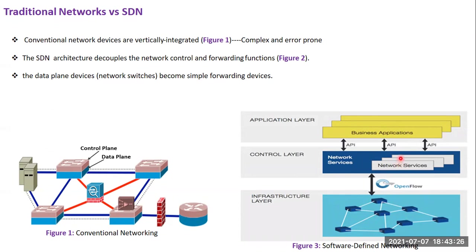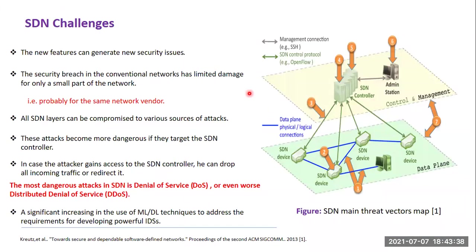We can also implement any application through the Northbound API — applications like security applications, load balancer, quality of service, and so on. However, one of the biggest challenges in the network is security. The security in the SDN network is a double-edged sword. We can use SDN to enhance security by implementing new security applications like firewalls or intrusion detection systems. But unfortunately, separating the controller from data plane devices can generate new attack classes that did not exist before in traditional networks.